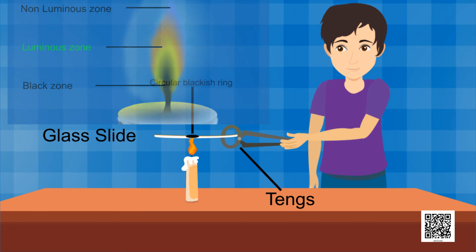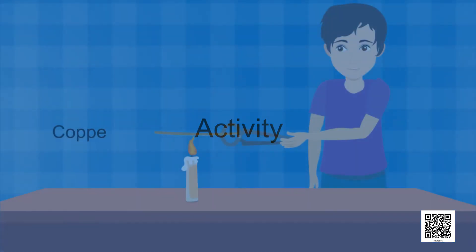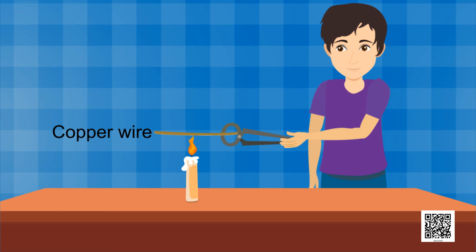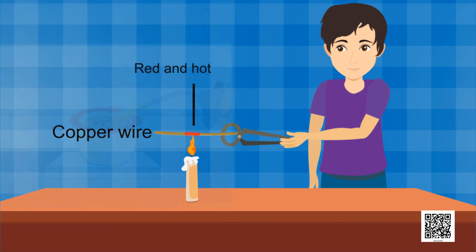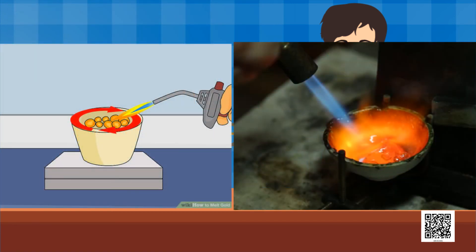Hold a thin copper wire just inside the flame for about thirty seconds. You will notice that the portion of the wire in the non-luminous zone becomes red hot. This indicates that the non-luminous zone has a high temperature — it is the hottest zone of the flame and is called the outer zone of complete combustion. That is why goldsmiths blow the outermost zone of a flame with a metallic blowpipe for melting gold and silver.